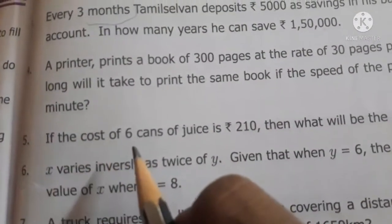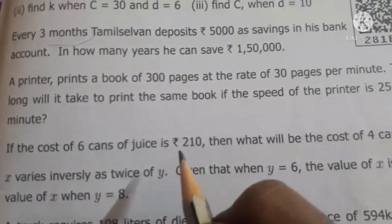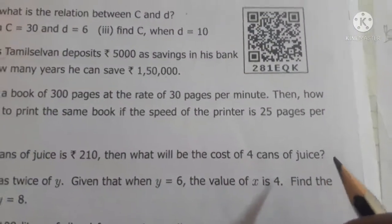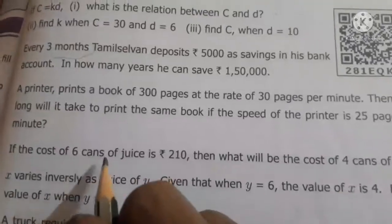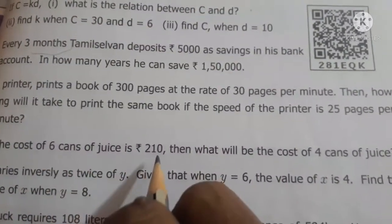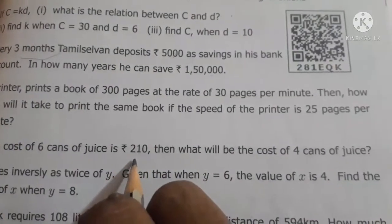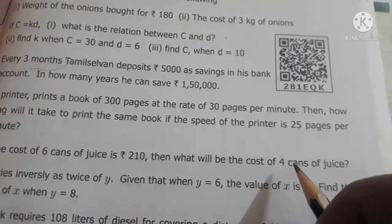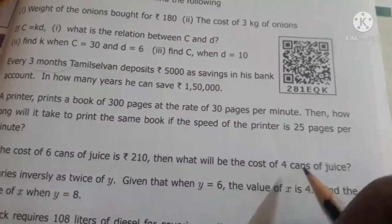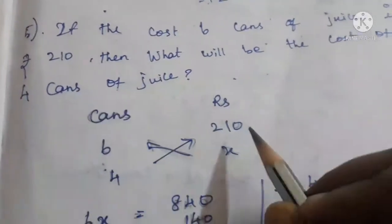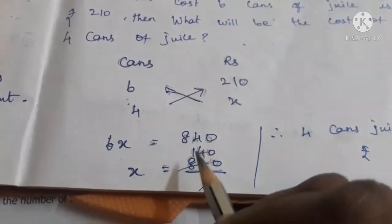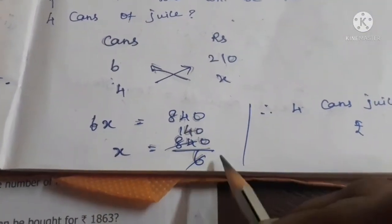We are going to the 5th sum. If the cost of 6 cans of juice is Rs.210, then what will be the cost of 4 cans of juice? 6 cans of juice is Rs.210. For 4 cans of juice, by cross multiplication: 6x = 4 into 210 = 840. So x = 840 divided by 6.